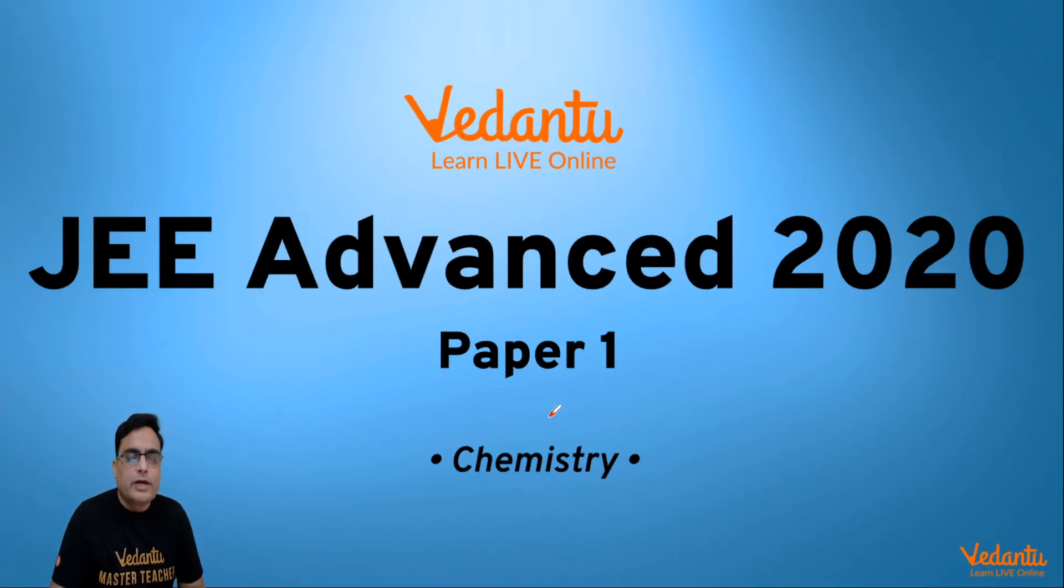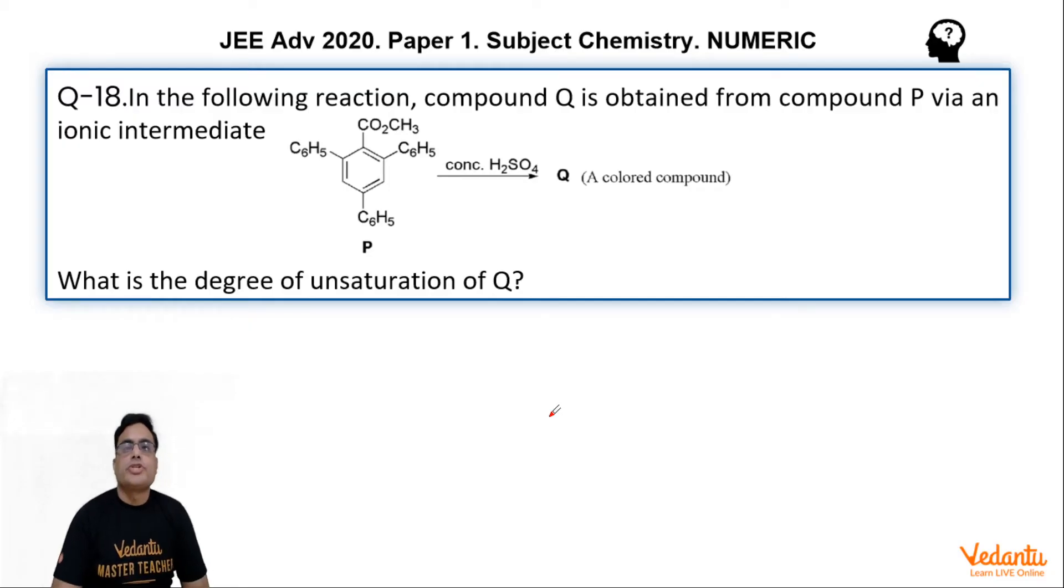Hello guys, I am Vinay Pandey, VKP master teacher in Vedantu, and we shall solve this question 18 of JEE Advanced 2020 paper 1 chemistry. It is a numerical type question, a kind of subjective question where you have to find some final answer as a number.